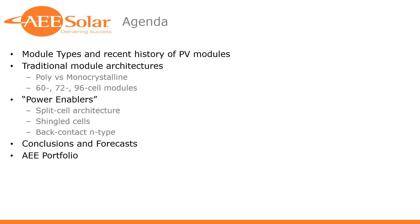We'll focus on poly versus monocrystalline, and talk briefly on 60 versus 70 versus 96 cell modules and what that means for applications. The bulk of what we want to talk about today is what I'd colloquially call power enablers — features and technologies being applied to modules that increase module efficiency, that give you more watts per square foot and help you build the most efficient and productive systems you can. Split cell architecture is one we'll spend a fair amount of time on. We'll also talk about shingled cells, back contact, and a little about N-type. Then we'll wrap up with conclusions, forecasts, and what's in the AE portfolio.